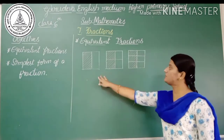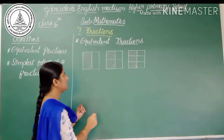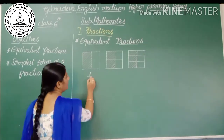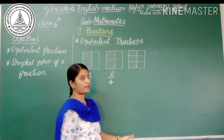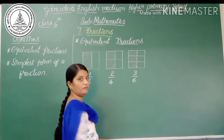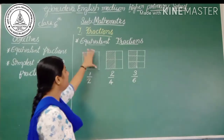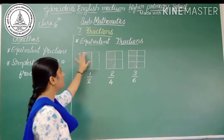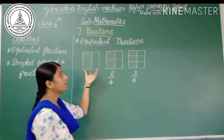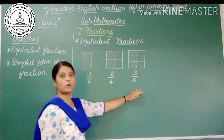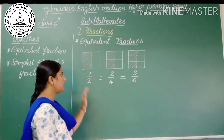Equivalent fractions: observe these 3 figures and write the fractions. This figure represents the fraction 1/2, this figure represents the fraction 2/4, and the third figure represents the fraction 3/6. So 1/2, 2/4, and 3/6 represent the parts taken from the total number of parts. If we place the pictorial figures one on the other, they are found to be equal, and then these fractions are called equivalent fractions.